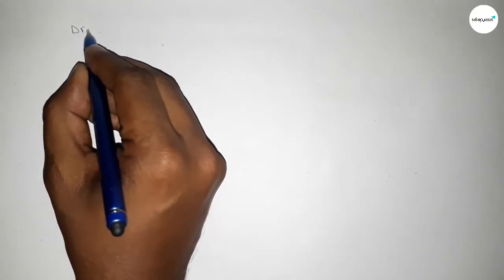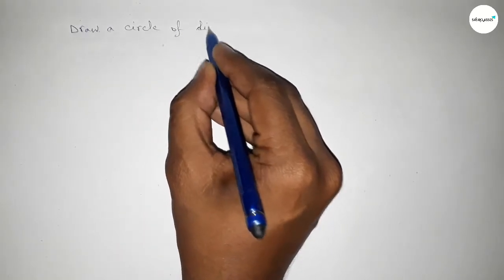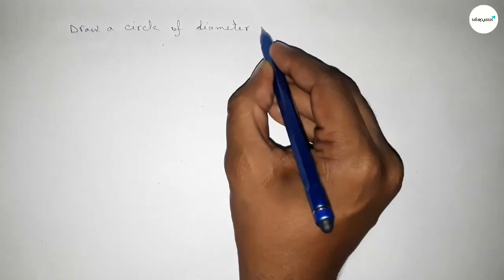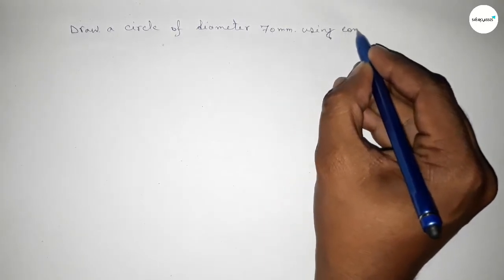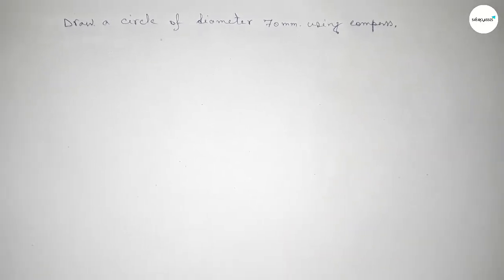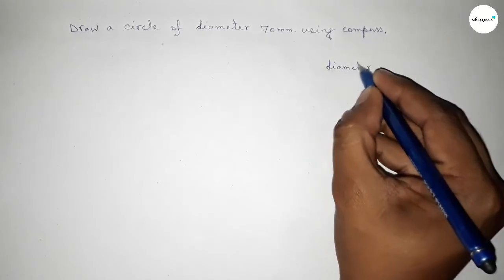Hi everyone, welcome to SI Share Classes. Today in this video we have to draw a circle of diameter 70 millimeter by using compass in an easy way. So let's start the video. First of all, talking about diameter, so diameter equal to 70 millimeter.